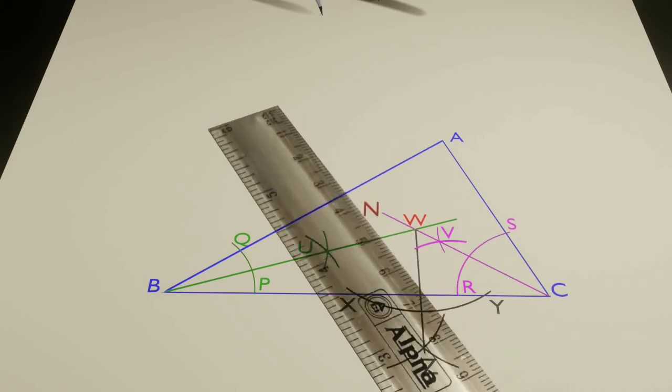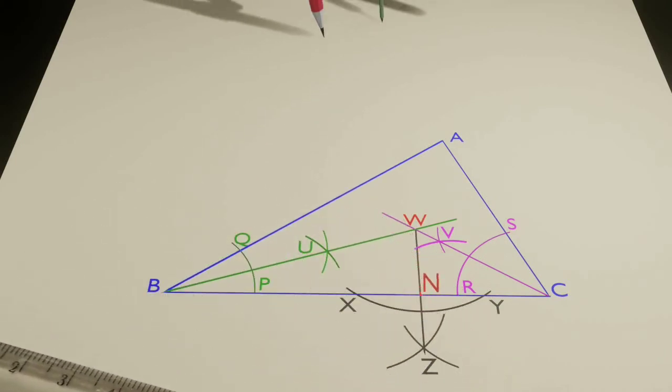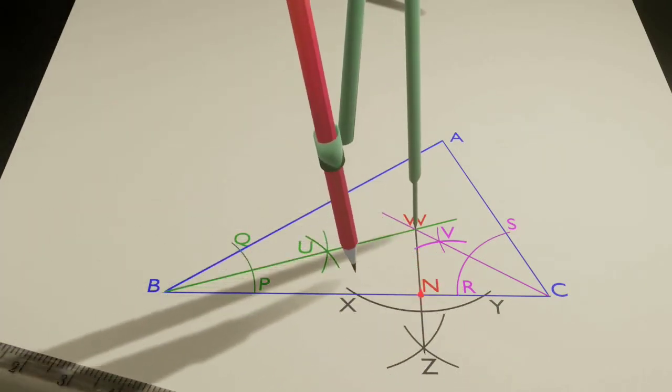Finally, the inscribed circle can be drawn by making point W as the center and taking length WN as radius.